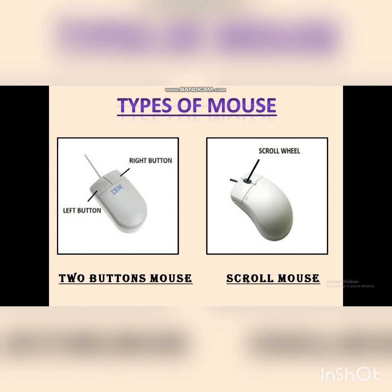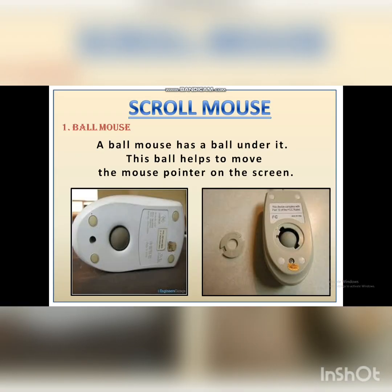With the invention of the mouse, there came also a new feature of a scroll mouse. This is the 4th type of mouse, and in this 4th type, there came a new feature known as the scroll wheel. Along with the scroll wheel, we also had 2 buttons: the left and the right button. Now let's see what a scroll mouse is.